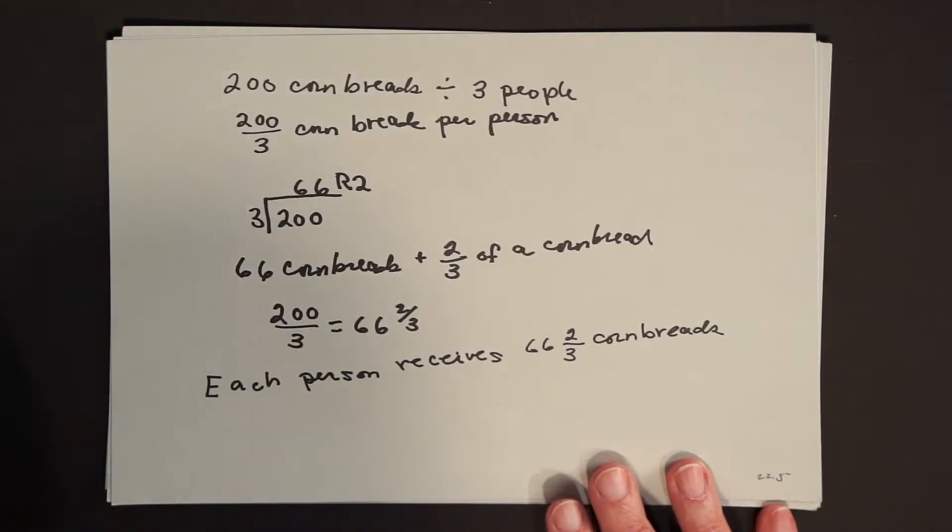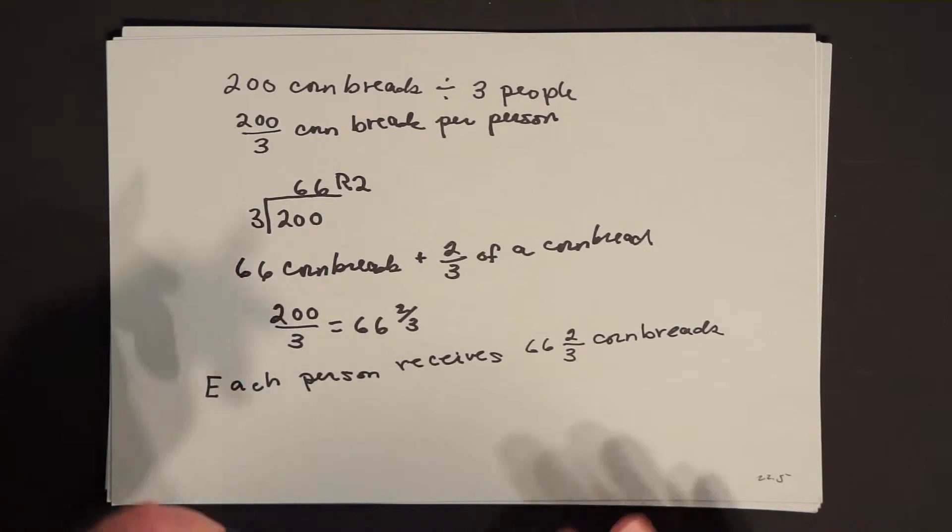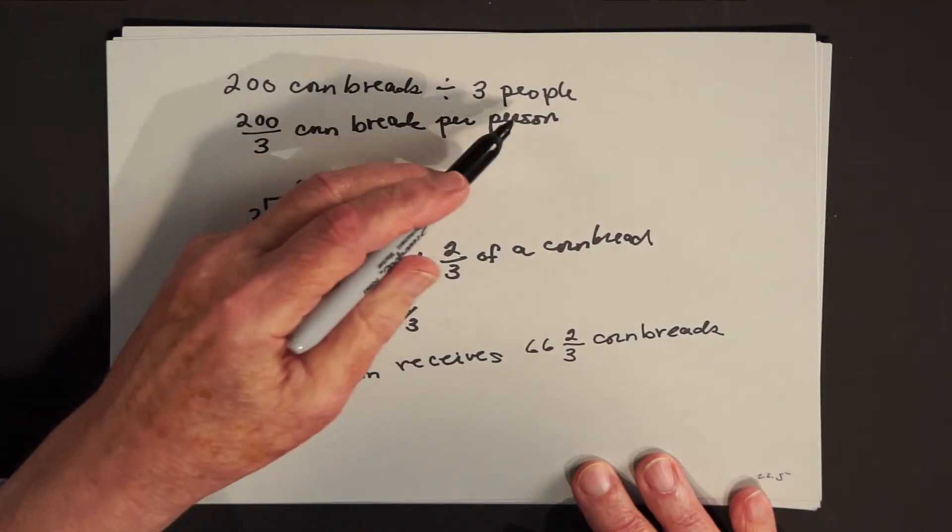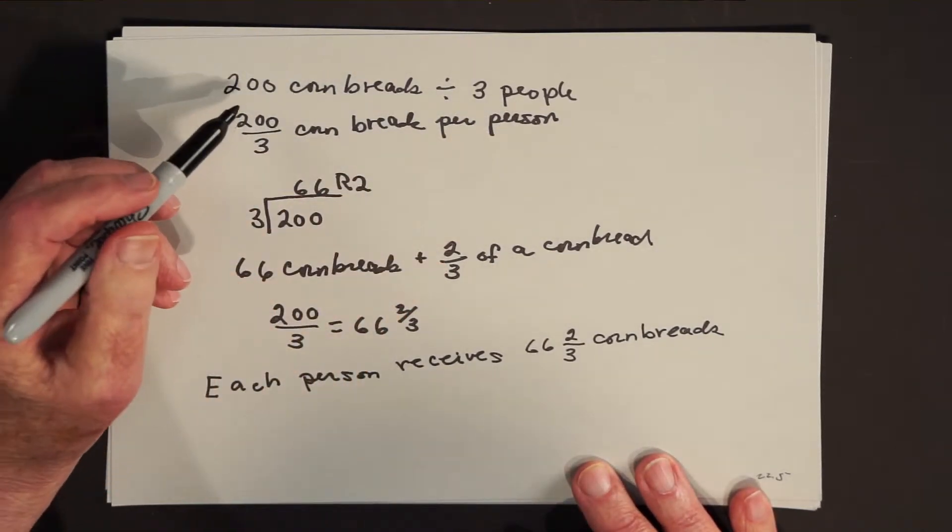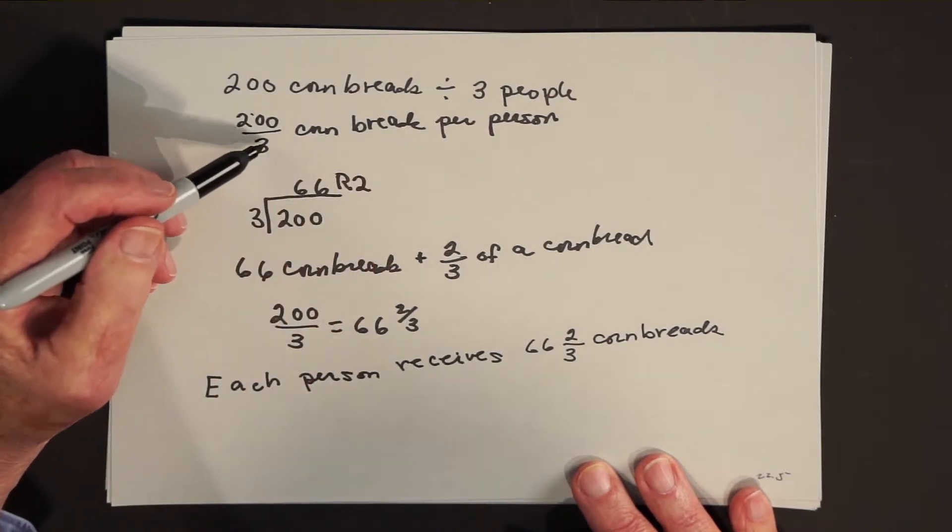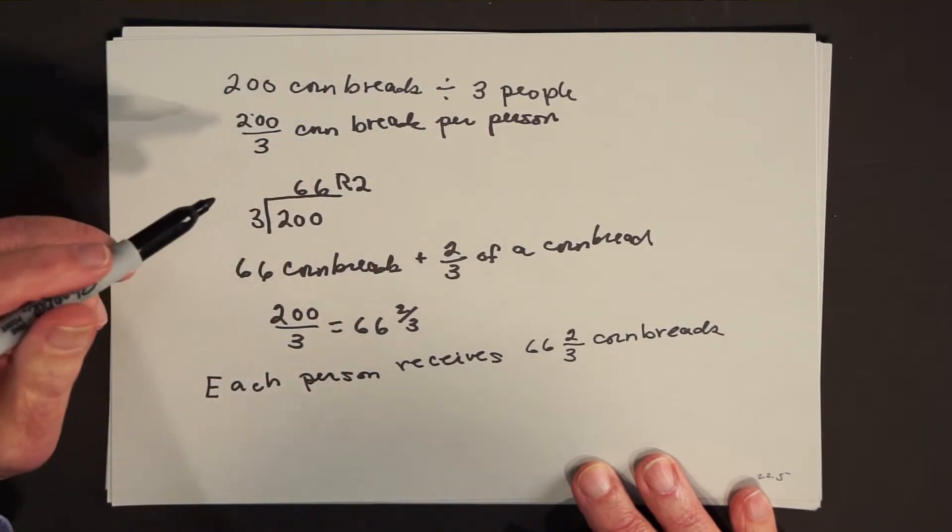Now, you could do the same thing if you had 200 cornbreads and 3 people. What you could say is, I'll cut each of the 200 cornbreads into 3 pieces, and I'll give each person 1 piece from each of the 200. That's kind of a tedious process. So what we would most likely do is we would say, okay, 200 cornbreads divided by 3 people is the same as 200 divided by 3, 200 thirds cornbreads per person.